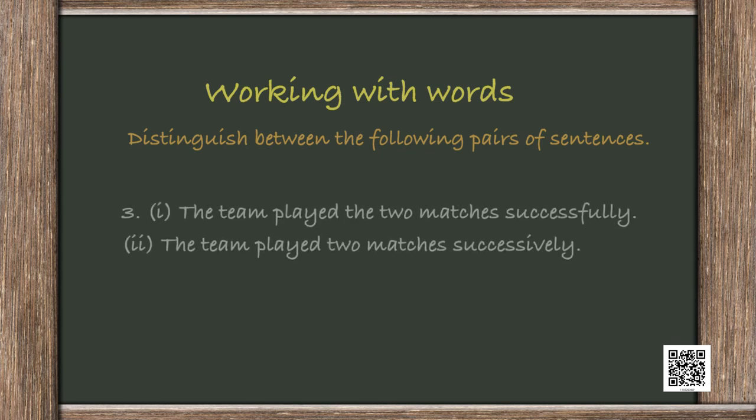'The team played two matches successfully' versus 'the team played two matches successively.' Successful is when you win, when you achieve success. Successive is one after the other — you play one match, then the next day another match, then the next day another. So you played three days in succession — that is successive. And if you won all three matches, you were successful in all three matches: 'I successfully won all three successive matches.'